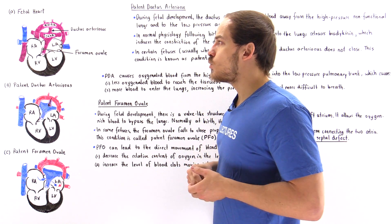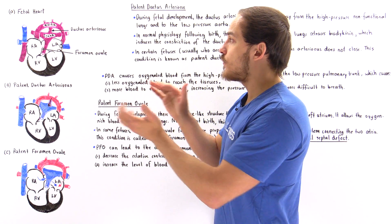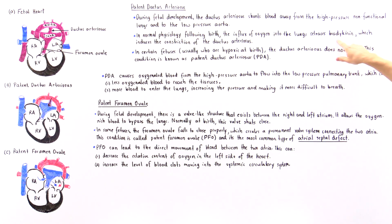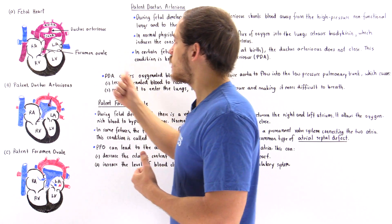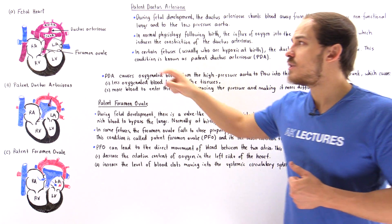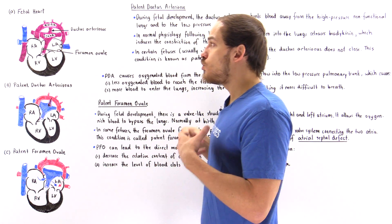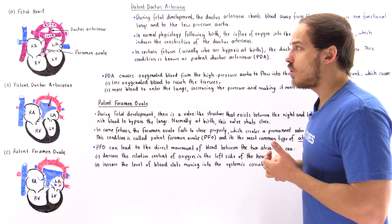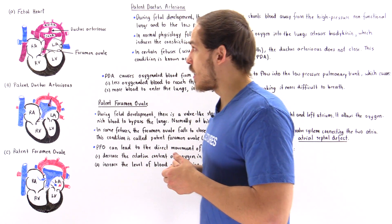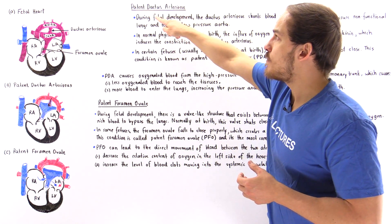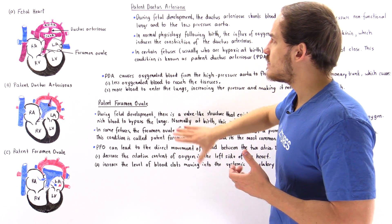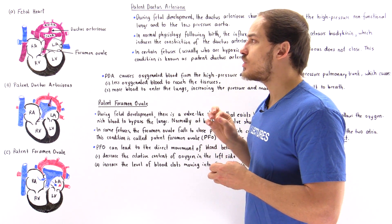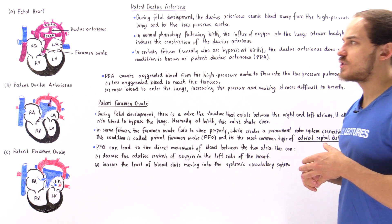As a result of this pressure reversal, the foramen ovale essentially shuts closed at birth. Additionally, because the lungs are now oxygenated, a special protein called bradykinin is produced. Bradykinin uses that oxygen and enters the ductus arteriosus, beginning to constrict it and eventually closing it off. Normally, the foramen ovale closes within several minutes, and the ductus arteriosus closes within several hours.